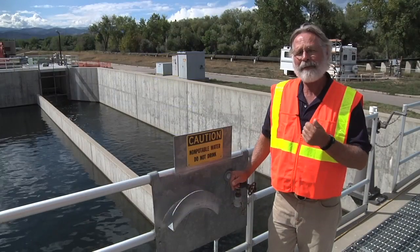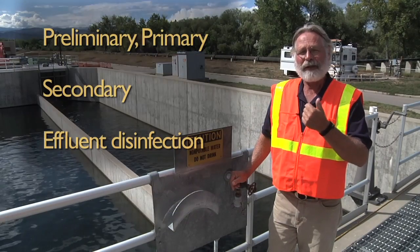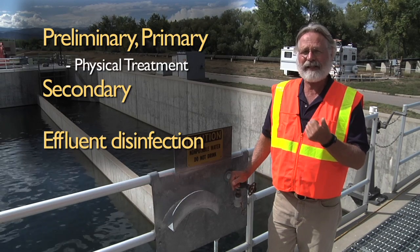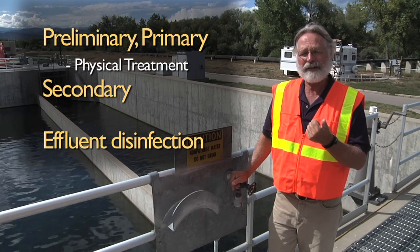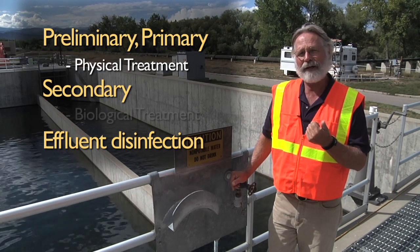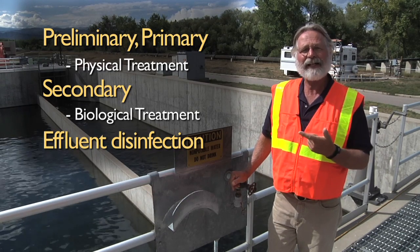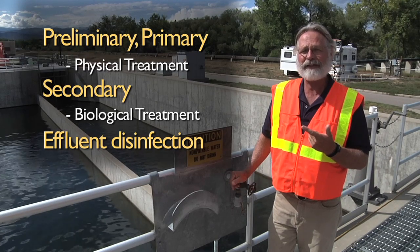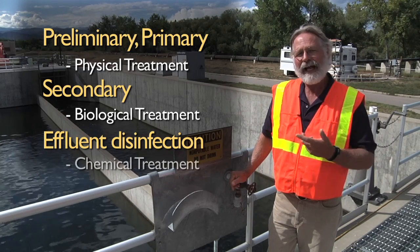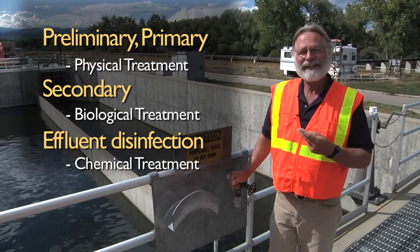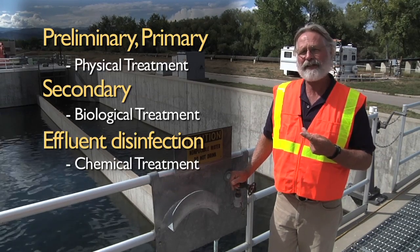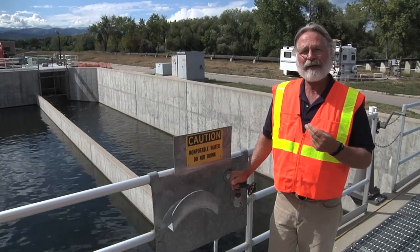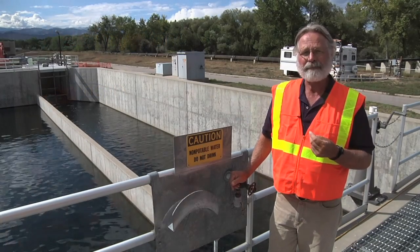Just to recap: our preliminary and primary treatment used physical treatment to settle out contaminants from the water. Our secondary treatment used biological treatment to remove contaminants from the water. And now we're using a chemical treatment to get rid of the pathogens that remain in the water and make it ready to discharge to the stream.